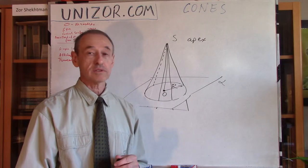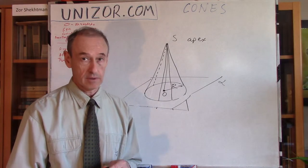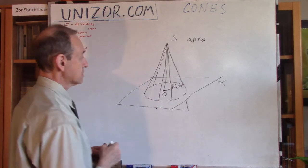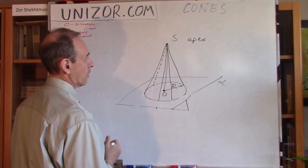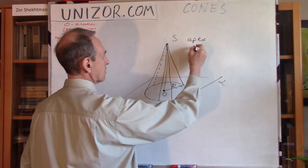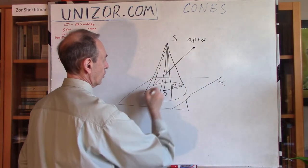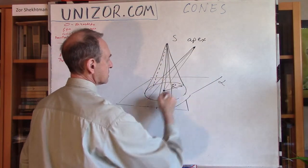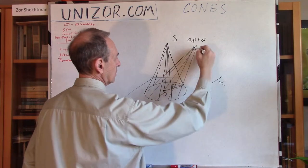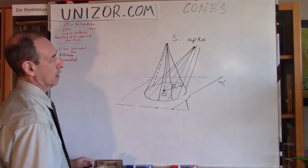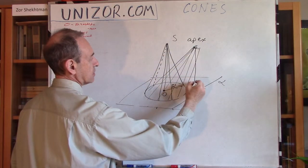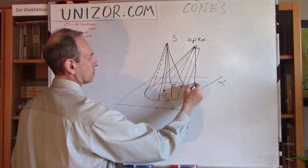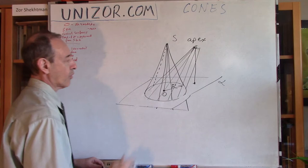To tell you the truth, most likely we will not consider any other cones. I mean, I can assume that you can draw another cone where the apex is somewhere here, and also connect all the points of this circle to the apex, which is here, which is actually projecting through a perpendicular onto the plane into some other point, not into the center.